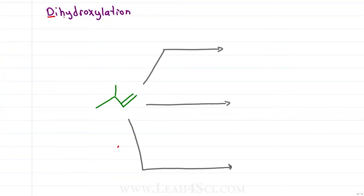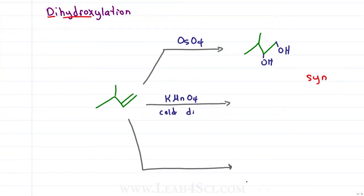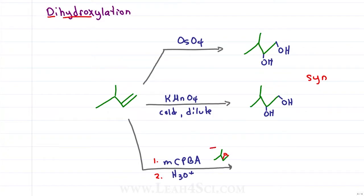We have three reactions for dihydroxylation, where we're adding two hydroxy or OH groups across the pi bond. OsO4 will give us two OH groups that are syn to each other, as will KMnO4 in a cold dilute solution — but not in a hot concentrated solution. Going back to epoxidation, if we use a peracid such as MCPBA followed by H3O+, the epoxide will break open to give us another hydroxy group, but this time as an anti-addition where the hydroxy groups are opposite from each other.